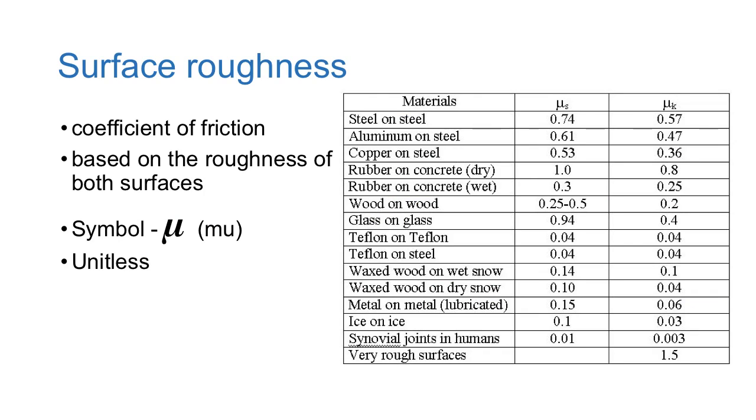Let's take a look at surface roughness a little bit more in detail. We call the surface roughness the coefficient of friction, and this is basically based on the roughness of both surfaces. You can imagine if you had sandpaper on sandpaper, that's going to have a very high coefficient of friction. If you had ice on ice, that's going to have a very low coefficient of friction. In fact, you can see ice on ice has a coefficient of like 0.1 for static friction; kinetic friction is going to be 0.03. You can see a high one - rubber on dry concrete.